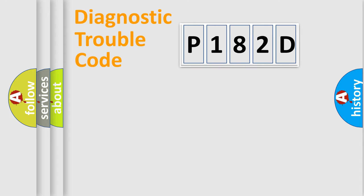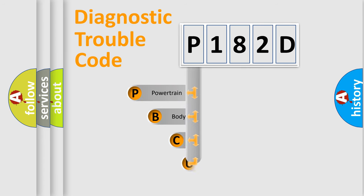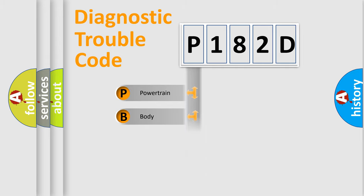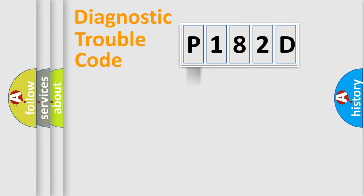Let's do this. First, let's look at the history of diagnostic fault code composition according to the OBD2 protocol, which is unified for all automakers since 2000. We divide the electrical system of an automobile into four basic units: Powertrain, Body, Chassis, and Network.